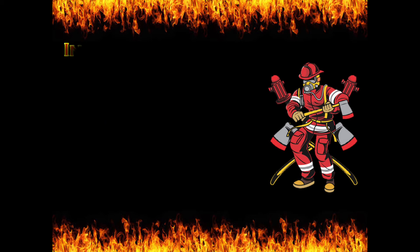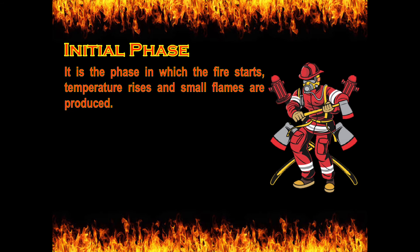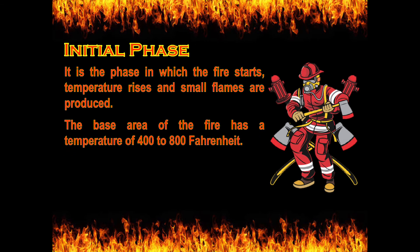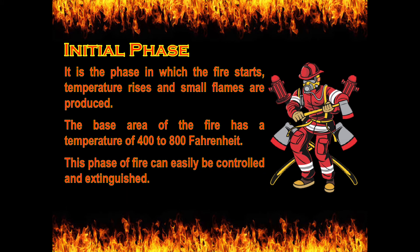First would be the incipient or initial phase. It is the phase in which fire starts, temperature rises, and small flames are produced. The base area of the fire has a temperature of 400 to 800 degrees Fahrenheit. This phase of fire can easily be controlled and extinguished — it is the stage where the fire is just beginning to grow.